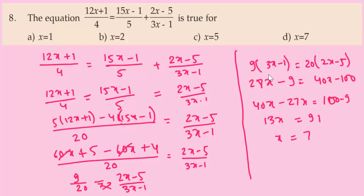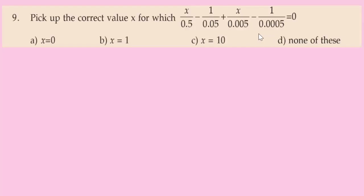X equals 91/13 equals 7. The answer is Option D. Option D is the correct answer.